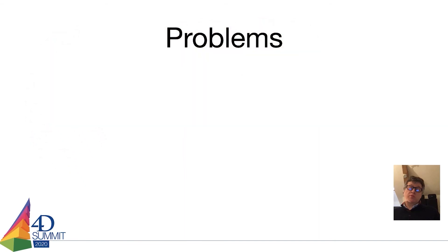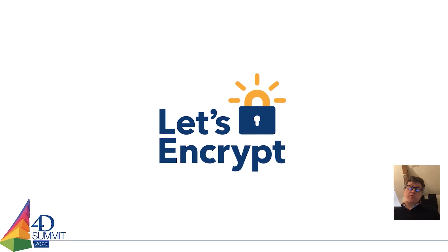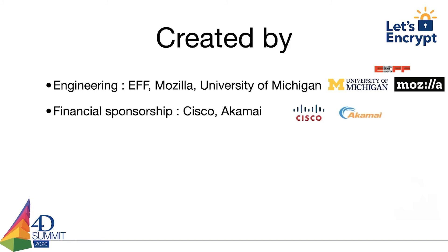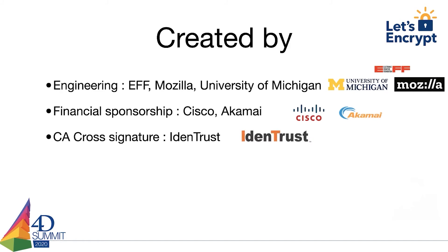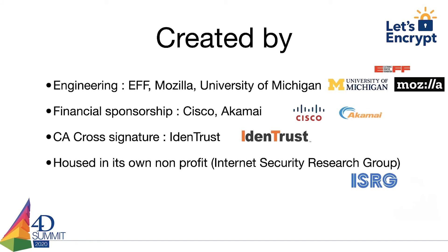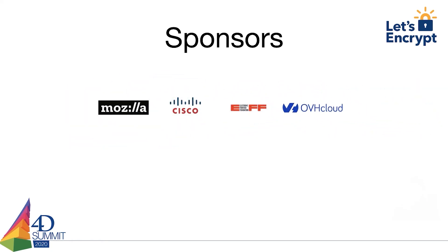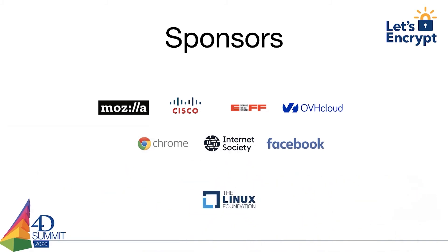The solution was to create a new certificate authority: Let's Encrypt. It was created at the end of 2014 by people from the EFF, Mozilla and the University of Michigan, with financial sponsorship from Cisco and Akamai. IdenTrust did cross-sign Let's Encrypt CA certificates to start. The project is hosted in its own non-profit organization, ISRG. The key principles are that it's free, automatic, secure, transparent, open, and cooperative. Today's sponsors include Mozilla, Cisco, EFF, OVH, Chrome, and Facebook.